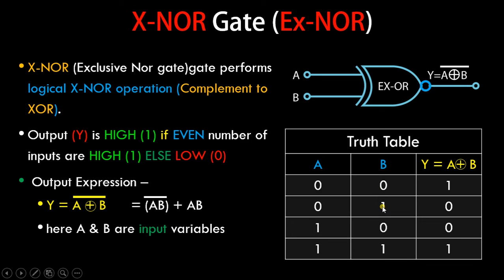In the second case we have input B as high, in the third we have input A as high. So only one input is high, so one is odd, that's why it is low. And then lastly we have both the inputs high, so two inputs are high. Two is even, that is why the output is high.